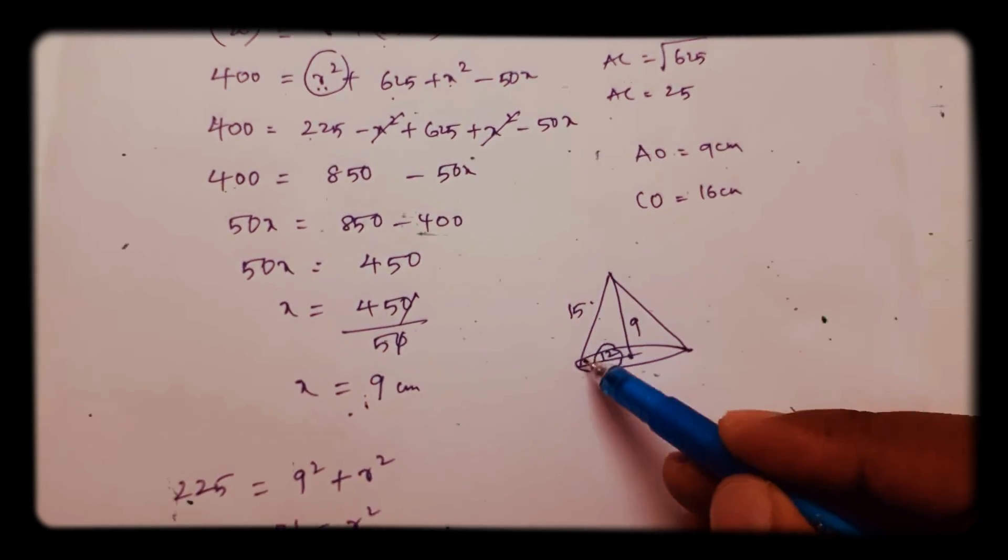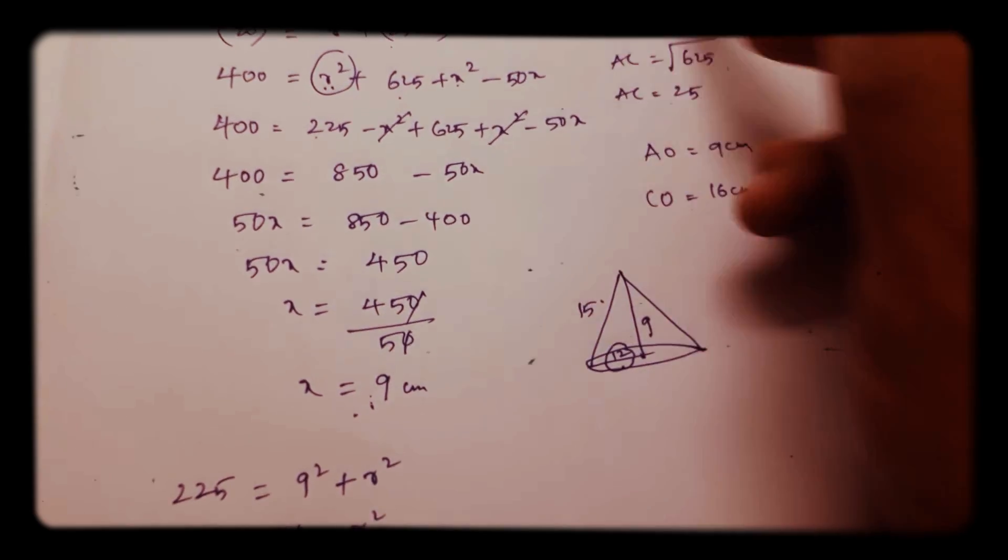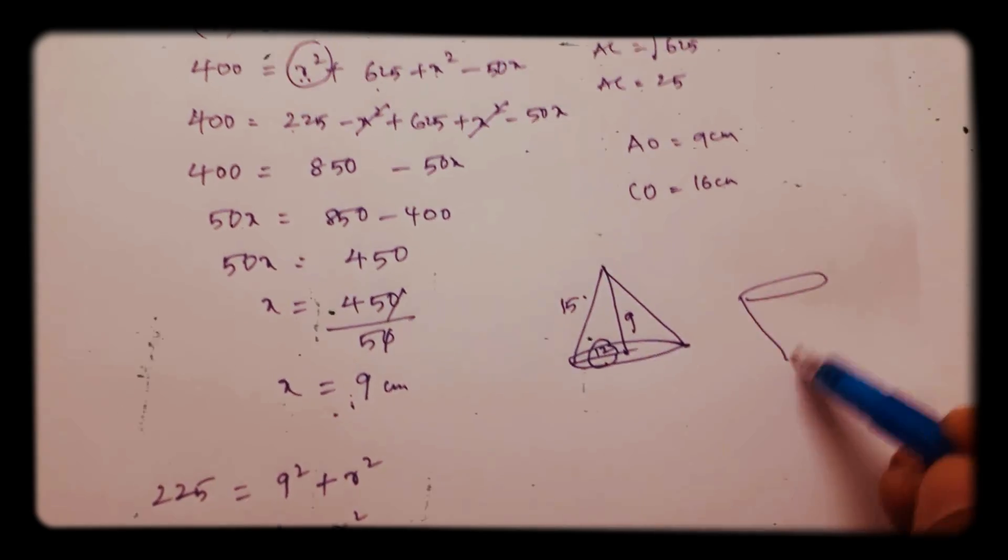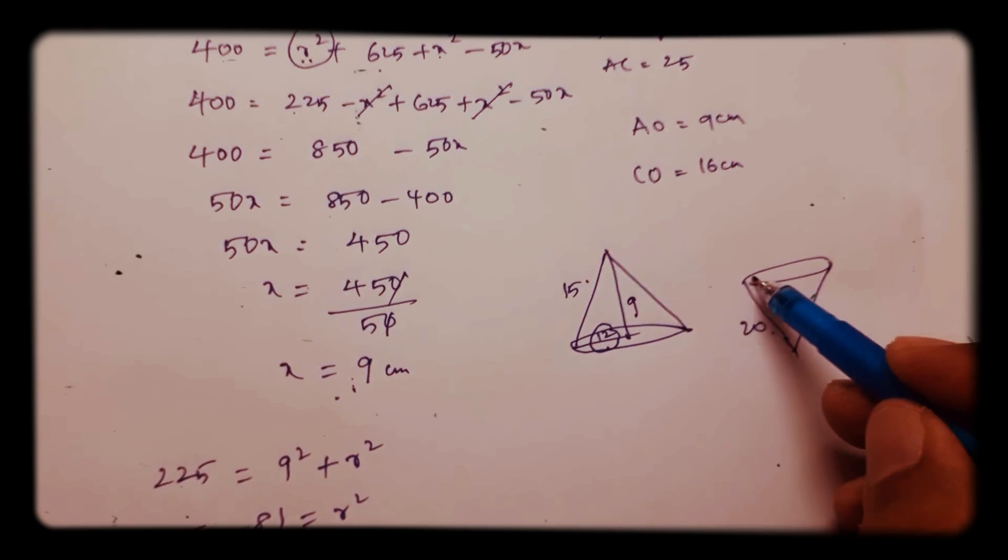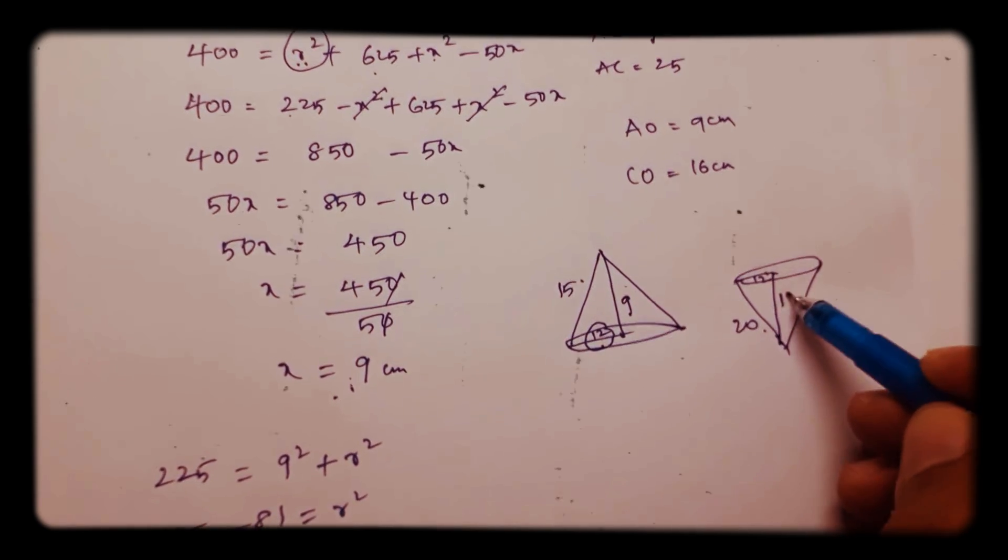So top cone slant height is 15, height is 9, radius is 12. And the bottom cone, slant height is 20, radius is 12, and height is 25 minus 9, which is 16.